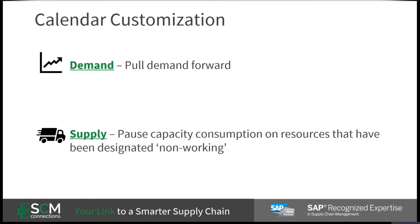To help mitigate demand shortfall, a regional planner can adjust a custom transportation calendar to bring the outbound customer demand forward. This will ensure that the correct amount of clothing goods arrive to the customer on time.